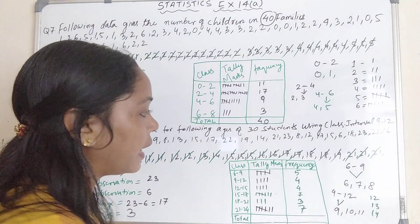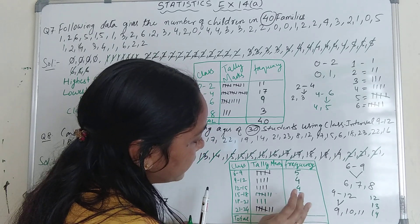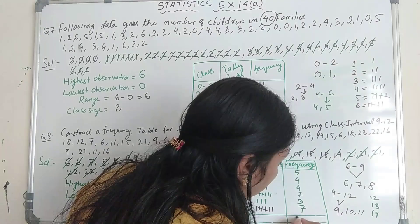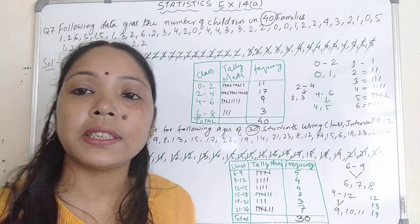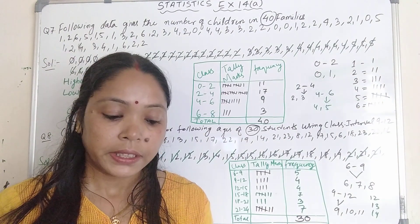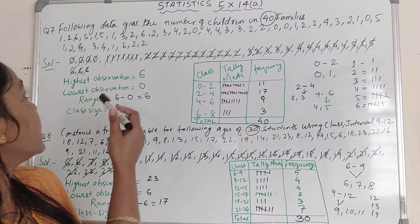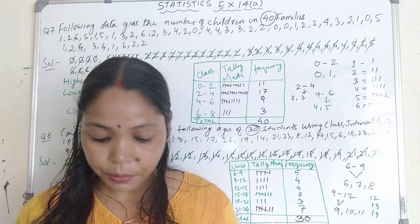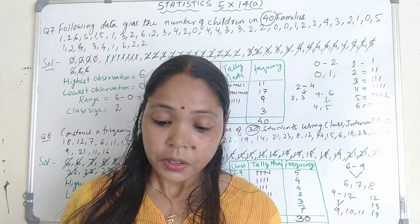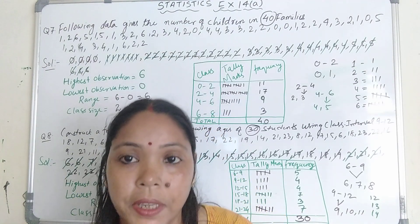Now add all frequencies for the total, which should equal 30 since 30 students are given. Adding: 5 plus 4 plus 4 plus 7 plus 7 plus 7 — counting up gives 23 plus 7 equals 30. This 30 and the given number of students of 30 are the same. In this way we have to make the frequency distribution table for given data. With the help of question number 7 and question number 8, you have to solve question number 9, 10, and 11. For today's assignment, do from question number 4 to question number 11 in your copy. Thank you.